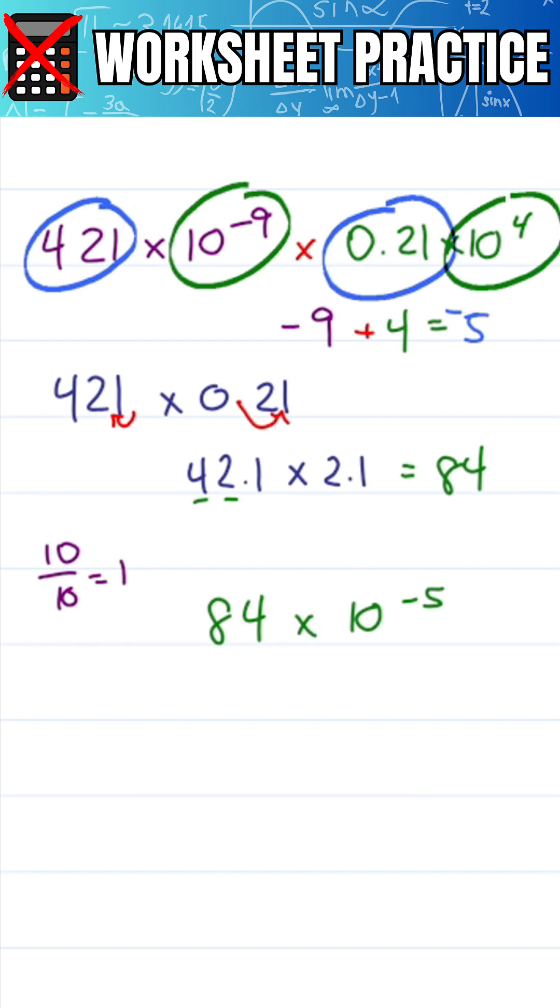Once again we'll use the decimal trick. We'll move this one one to the left making it smaller. So we'll move this one power up to minus 4 which is 10 times bigger for a final answer of 8.4 times 10 to the minus 4.